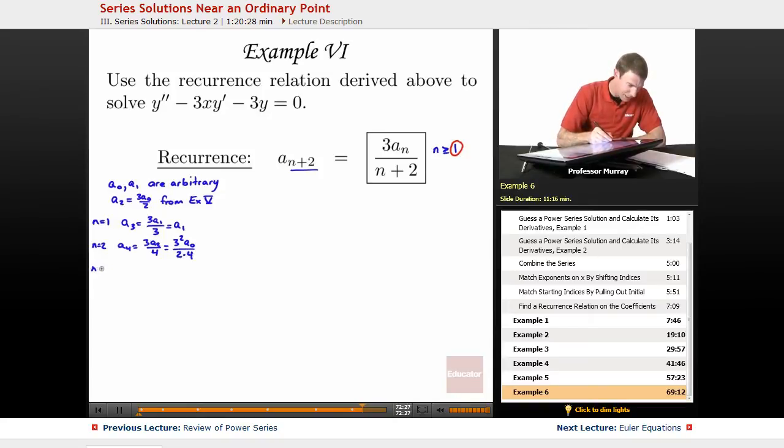From N equals 3, I get my A5 is going to be 3A3 over 5, which in terms of A1 is 3A1 over 5. That's coming from up here, when we figured out A3 in terms of A1.